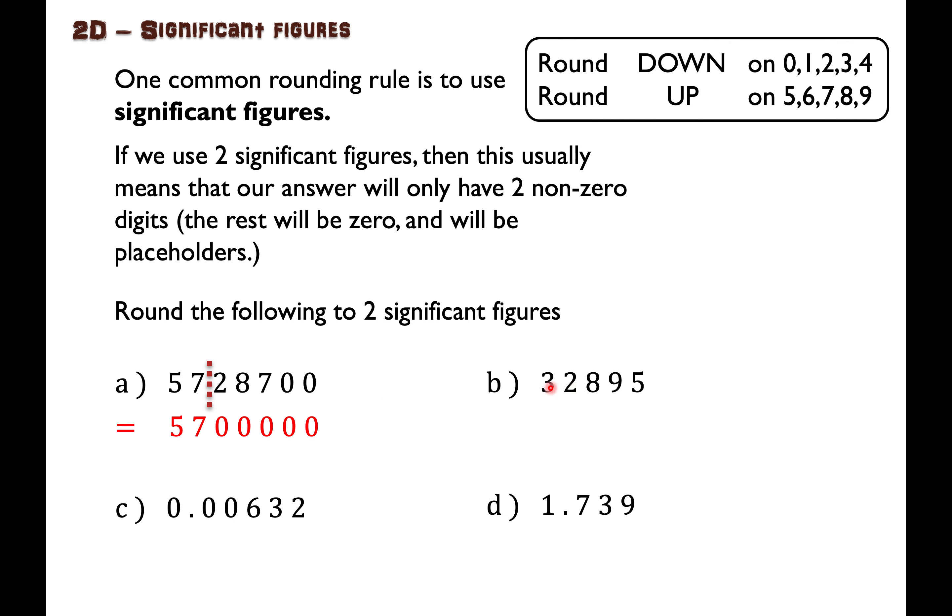This one I'll do the same thing. I read from left to right. I find the first number that's not a zero. There it is. And I move to the right two places. So I keep the first digit that's not a zero and the one after to have those two significant figures. You can see I've included two significant figures here.